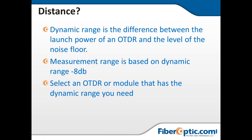Measurement range is something important to take into consideration. You need to subtract about 8 dB from the dynamic range to make sure you're able to accurately measure the fiber under test, because the noise floor comes into play. You take that dynamic range and subtract about 8 dB to make sure you've got enough separation between your noise floor and any events being measured.